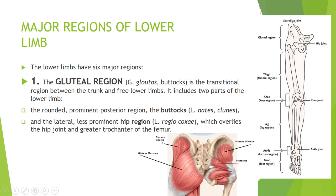The gluteal region includes two parts. The first is the rounded, prominent posterior region called the buttocks, also known by the Latin words 'nates' or 'clones.' The lateral part, which is less prominent, is called the hip region. The hip word comes from the Latin 'coxa,' which overlies the hip joint and the greater trochanter of the femur. So the gluteal region consists of two parts: the buttocks, prominent due to the gluteus maximus muscle, and the hip region laterally.